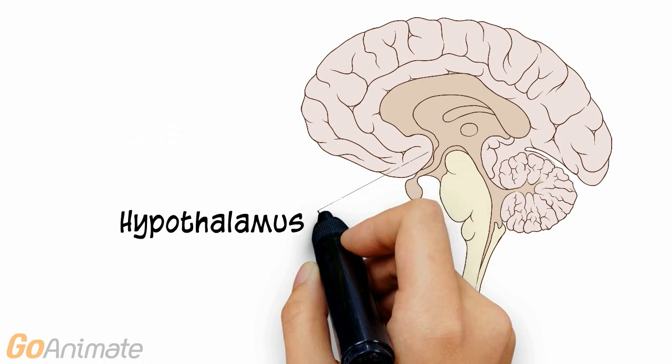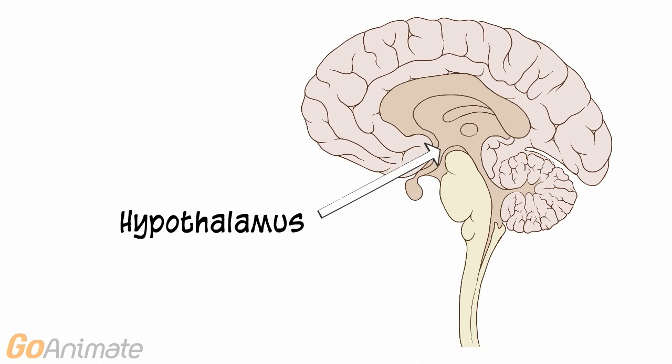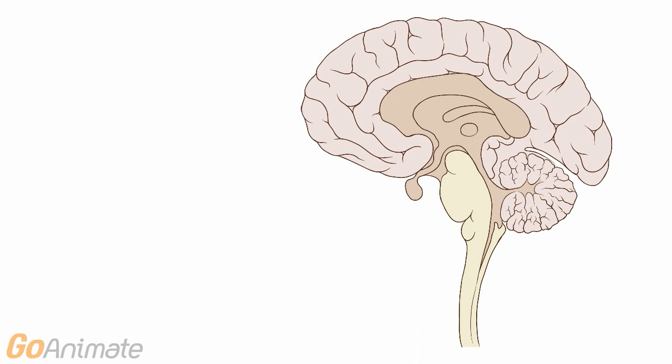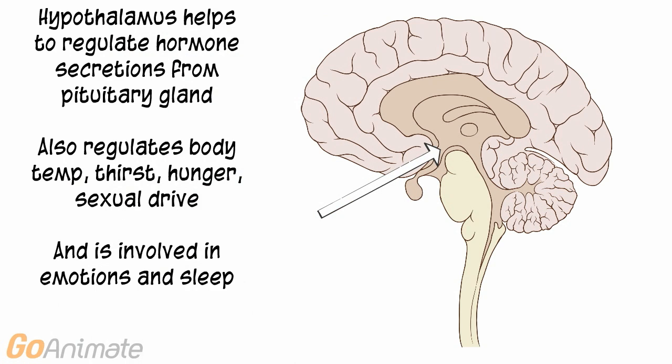The hypothalamus helps to regulate pituitary gland secretions. It also regulates body temperature, thirst, hunger, sexual drive, and is involved with the reticular formation in regulating sleep.